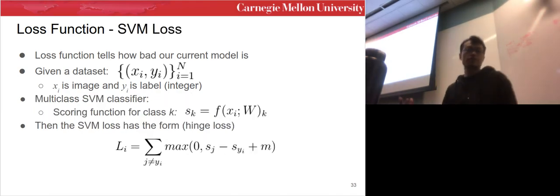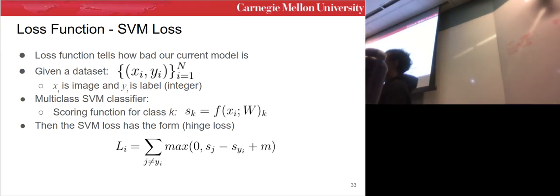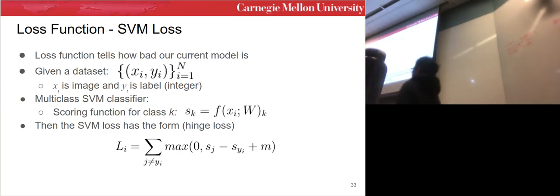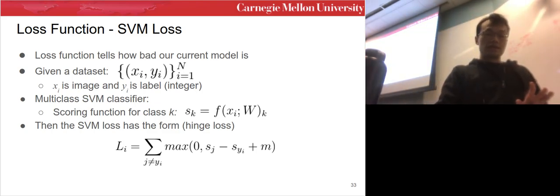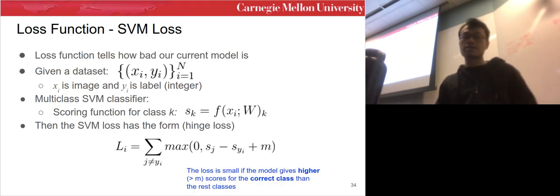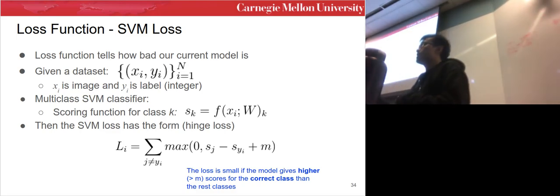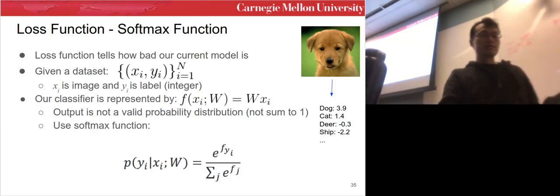For SVM, this is the hinge loss. The intuition is: sj is the score for other classes, syi is the score for the correct class. Minimizing this loss means the model gives higher scores for the correct class than for the rest, maintaining a margin between the correct class score and other class scores. This loss function intuition proved very useful for many years.